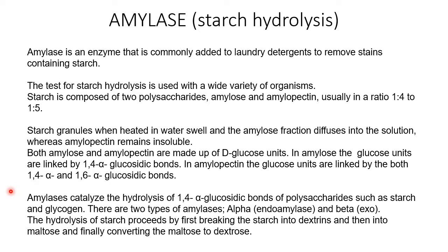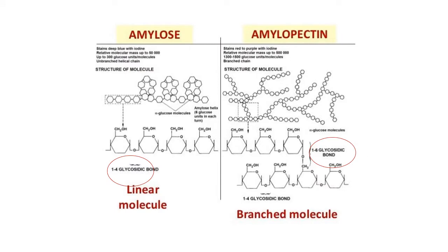Endoamylase acts internally and hydrolyzes alpha-1,4 glycosidic bonds. Beta-amylase, which is exoamylase, hydrolyzes alpha-1,4 glycosidic linkages from the non-reducing end to produce maltose — that is the difference between endo and exoamylase. This is the structure of amylose and amylopectin.